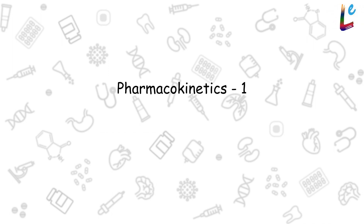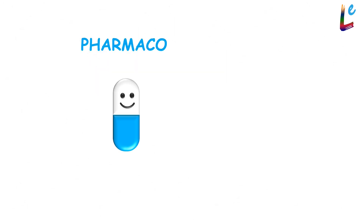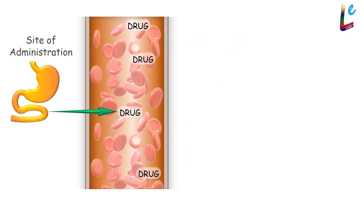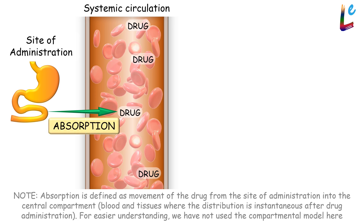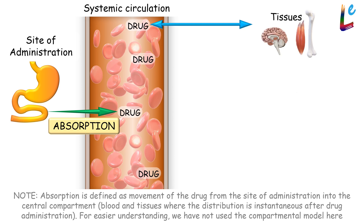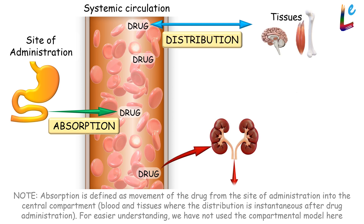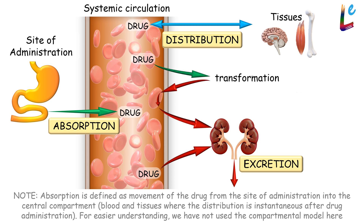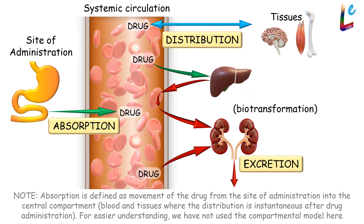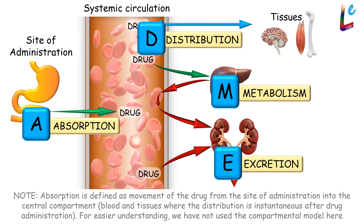Pharmacokinetics Part 1: Introduction to ADME. The term 'pharmaco' pertains to drugs and 'kinetics' to movement or motion. Movement of the drug from the site of administration into systemic circulation is absorption. Movement into tissues within the body is distribution. Movement out of the body is excretion. Sometimes the structure of the drug has to be transformed in the body to facilitate this movement — such a biotransformation is metabolism. This is the ADME of pharmacokinetics.